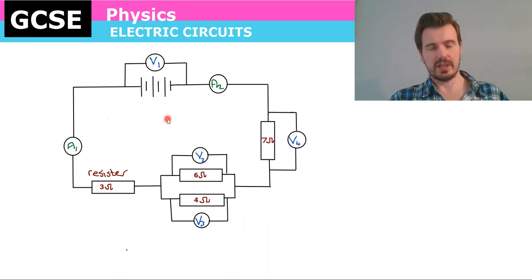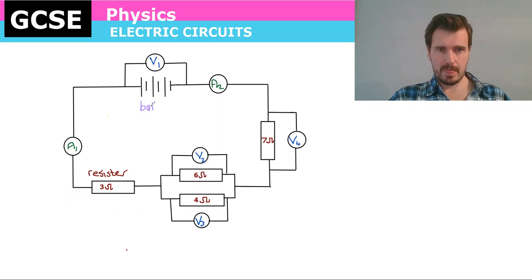So we know that a circuit is a flow of electrons. We'll start with the battery over here. Now this is a battery that contains three cells. So we'll just make a note there that that's the battery. You should all know that. Okay, and in the battery are these three cells. One, two, three.